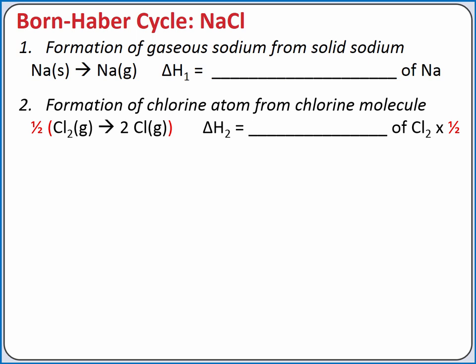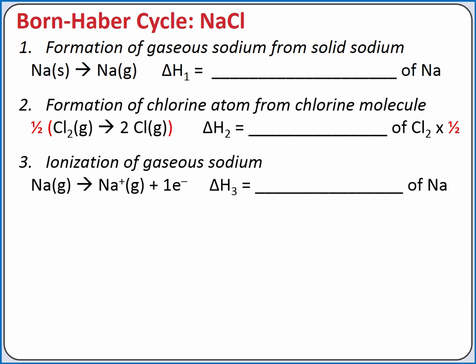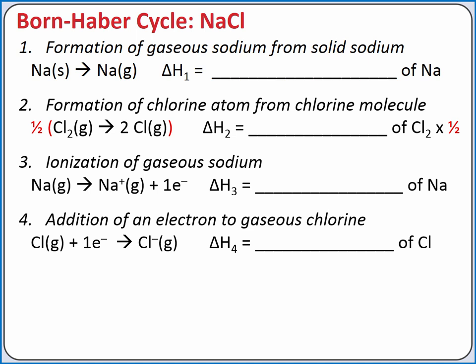So the enthalpy change for this step is one-half of the bond energy for a chlorine-chlorine single bond. In our next step, we can remove an electron from the gaseous sodium atom. The energy required to remove an electron from a gaseous atom is the ionization energy. So our enthalpy change for the third step is equal to the first ionization energy of sodium. In our next step, we'll add an electron to the gaseous chlorine atom. The energy change when we add an electron to a gaseous atom is the electron affinity.